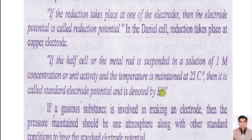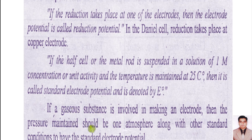If the naught symbol is not present on E, it means it is simple electrode potential — not in the standard state. But if we are using a gaseous substance working as an electrode, then there should be one atmospheric pressure. For a gaseous state electrode there are three conditions: number one, concentration should be 1 molar or unit activity; number two, temperature should be 25 degrees Celsius or 298 Kelvin; number three, for a gaseous substance, the pressure of the gas should be 1 atmosphere. E⁰ means standard state.